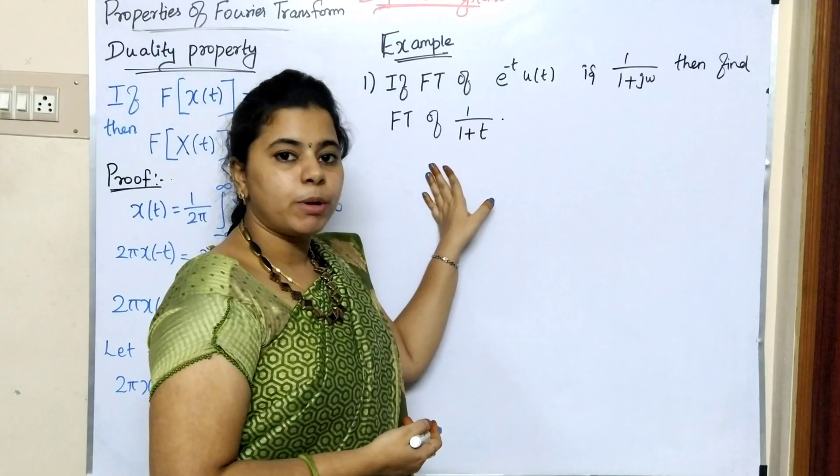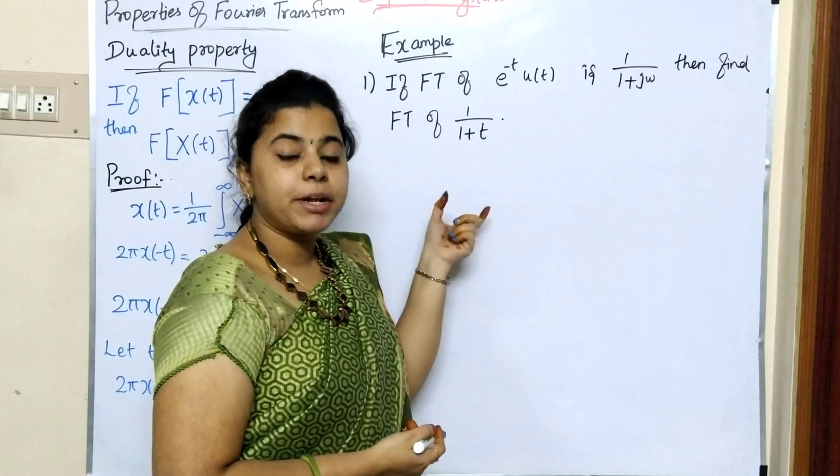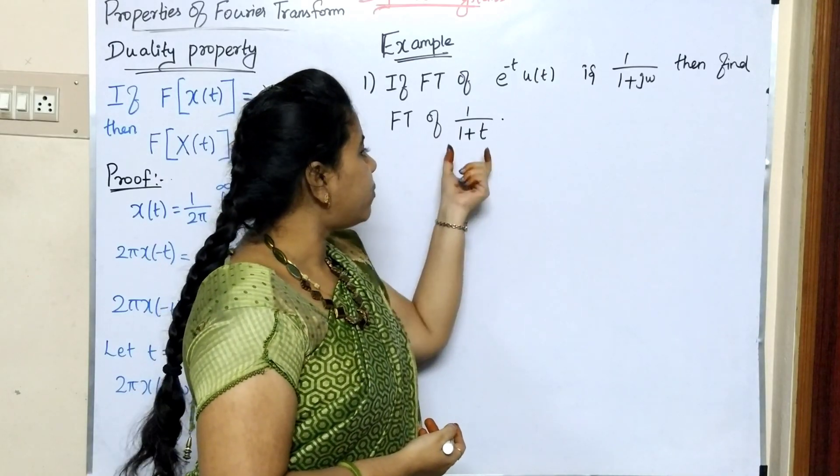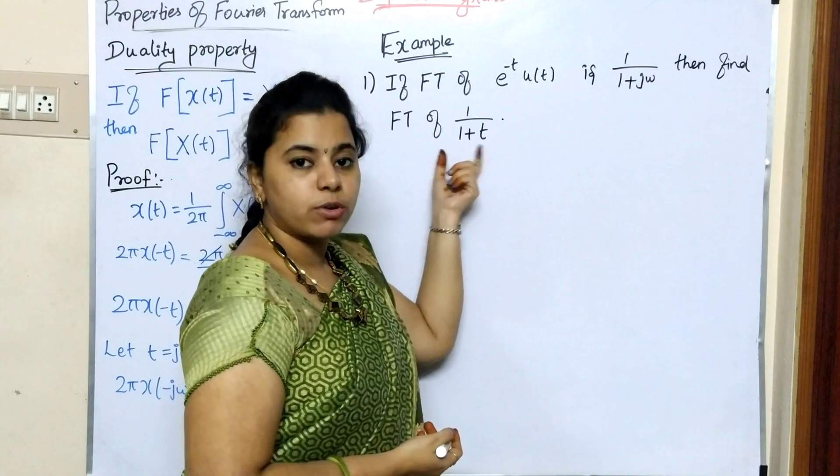Example problem using duality property: given 1 divided by 1 plus t squared.